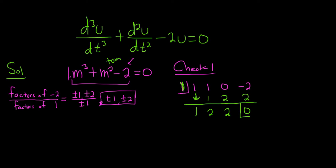You bring down the 1, 1 times 1 is 1, you add, 1 plus 1 is 2, 2 times 1 is 2, you add, 0 plus 2 is 2, 2 times 1 is 2, you add, negative 2 plus 2 is 0. So now you go with 1 less. This is cubed, so it'll be 1 times m squared, which is just m squared, plus 2m, plus 2 equals 0.